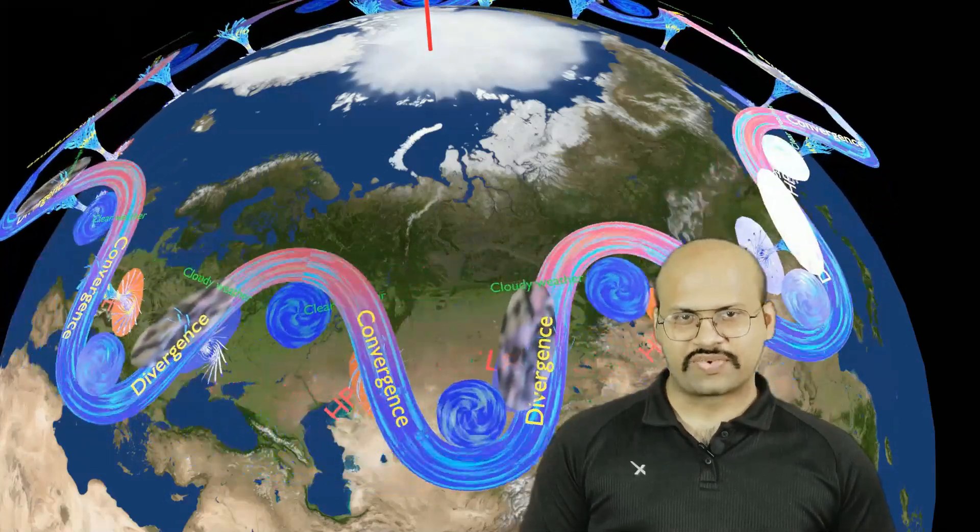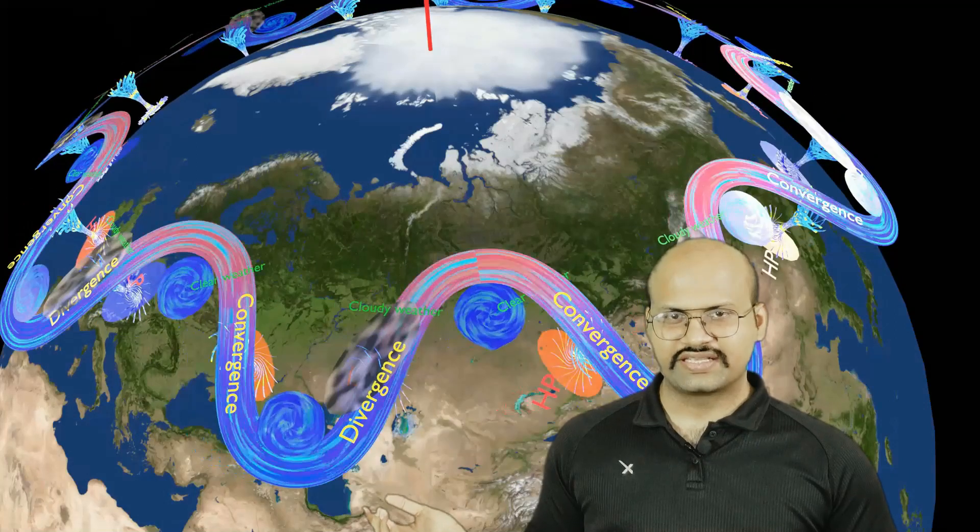We discussed in our previous video that the downward extension of the jet stream has a convergence zone where air accumulates, causing it to subduct and reach the surface, creating high pressure. Here we get clear sky, while in the northward extension of the jet stream there is a divergence zone. Air moves from the ground towards the jet stream, creating low pressure and cloudy weather. You can clearly see this phenomenon in the animation.